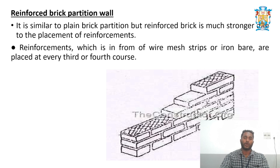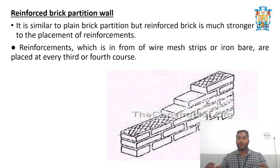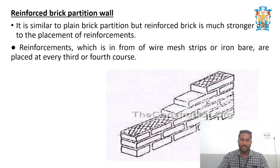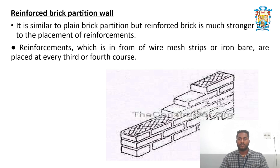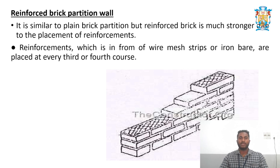The reinforced brick partition wall is similar to the plain brick partition wall, but with the addition of reinforcement — an iron mesh or wire mesh strip provided after every three or four courses of bricks. After placing three or four layers, the iron mesh is laid on the surface, then another three or four courses of bricks are added. These partitions are much stronger than plain brick partition walls.